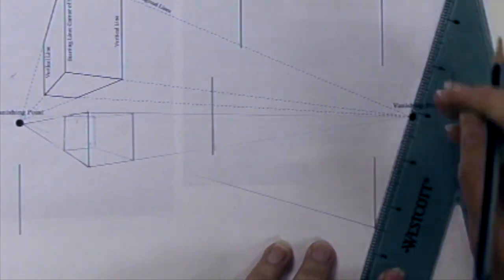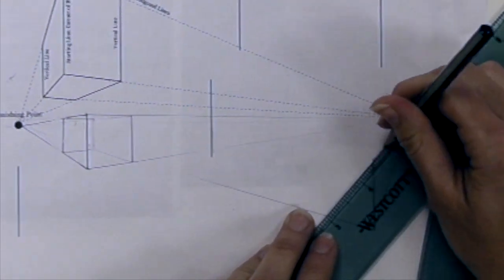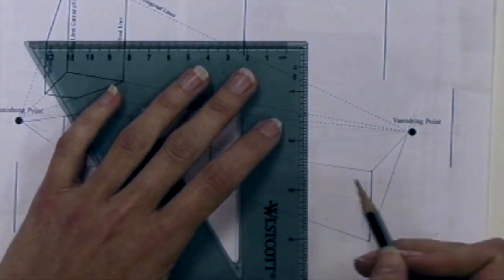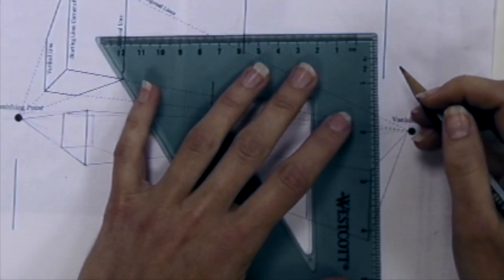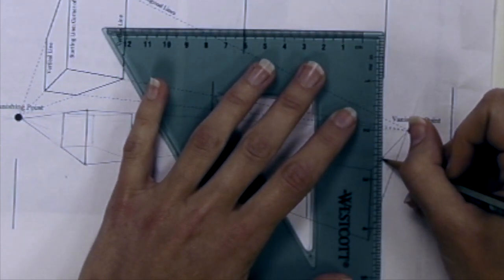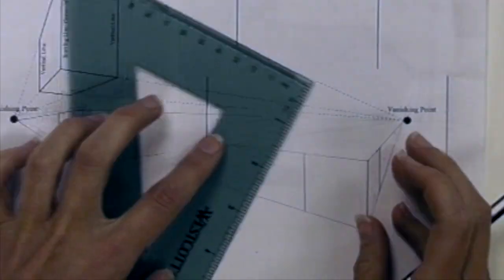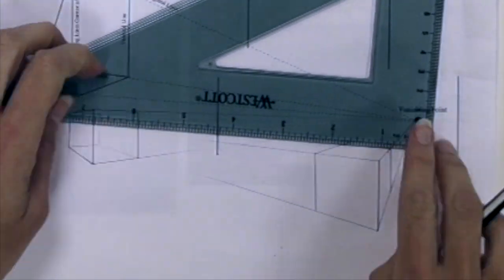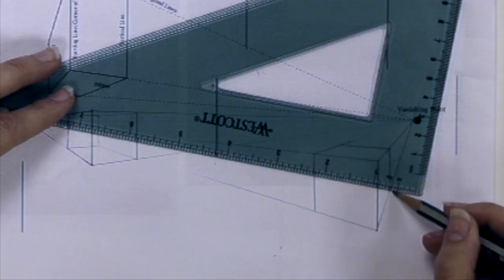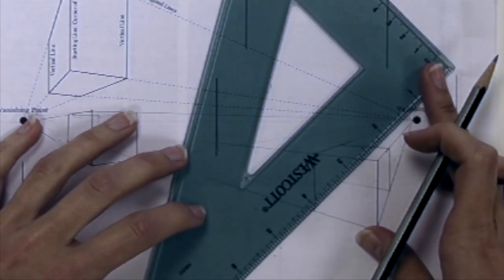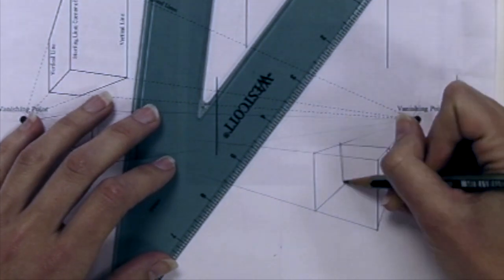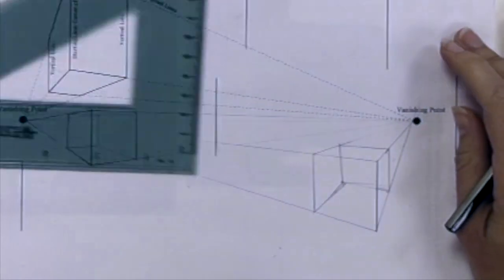I'm doing the same thing here, drawing all of the orthogonals back to the vanishing point, then deciding how deep the box should be. Next, I'm connecting those new lines, or the points connected to them, back to the vanishing point. Keep an eye out for the very last line I draw. It's going to show the back edge of the box, that line right there. A lot of people forget to draw that one.